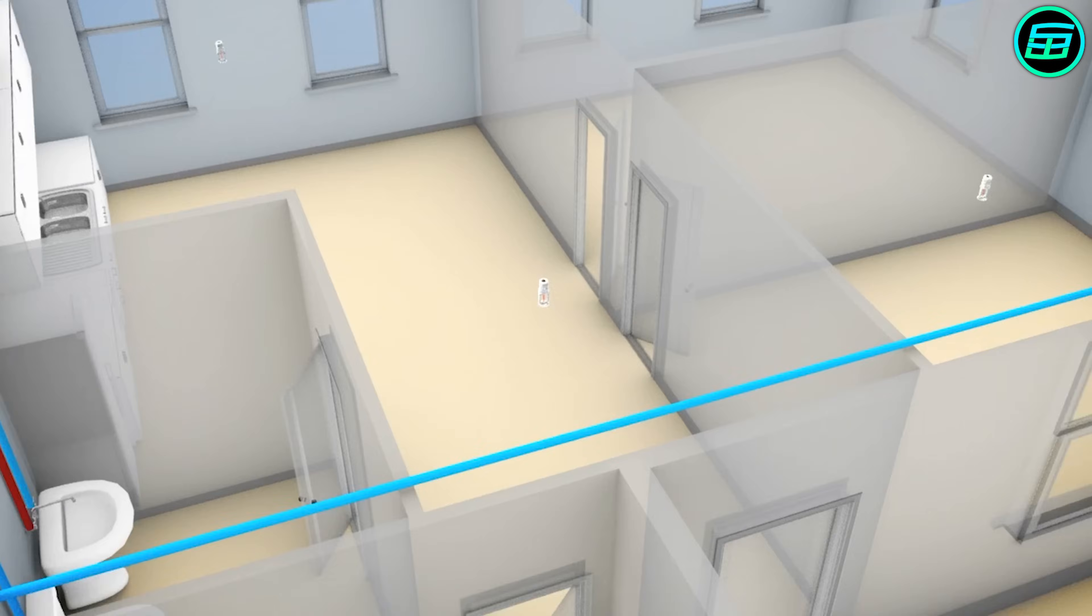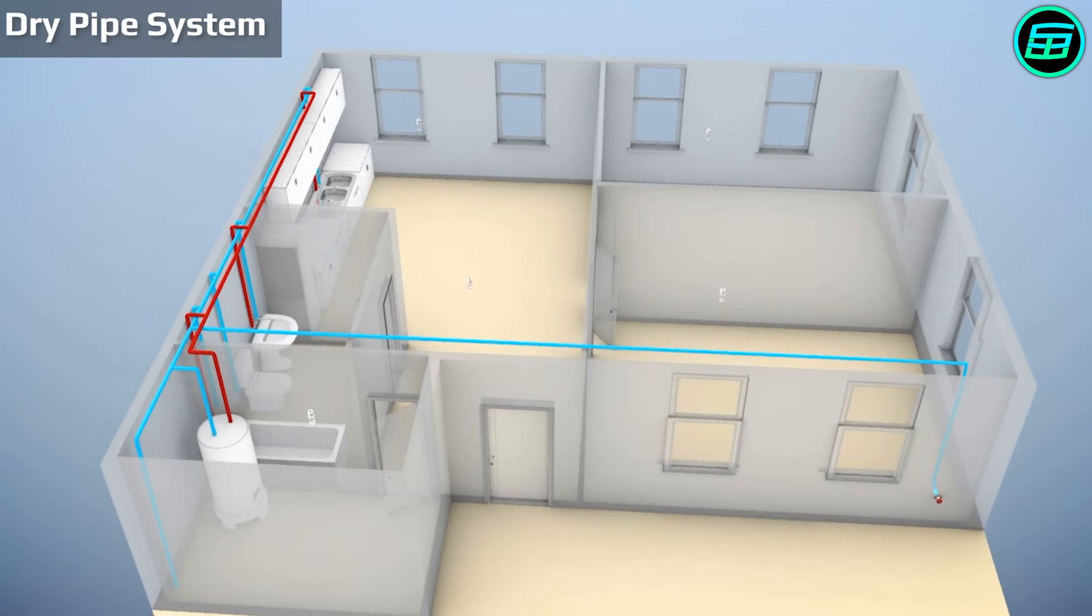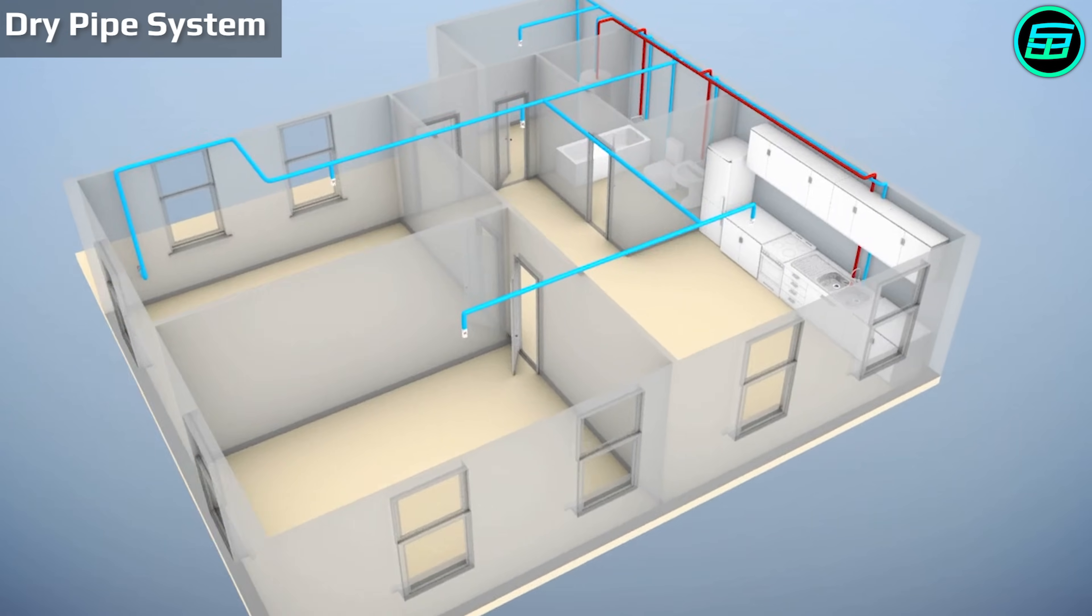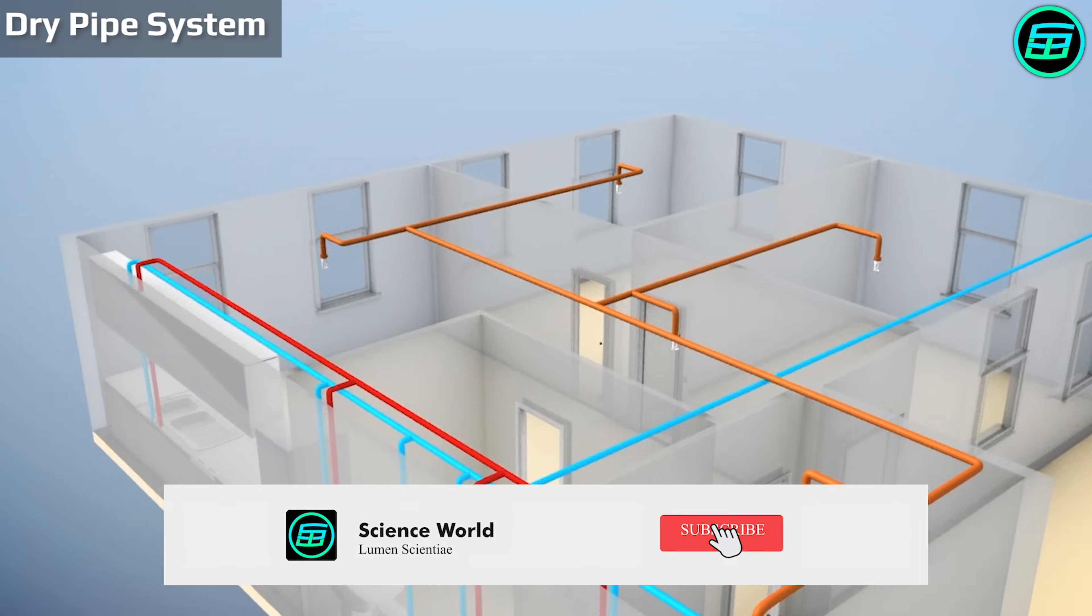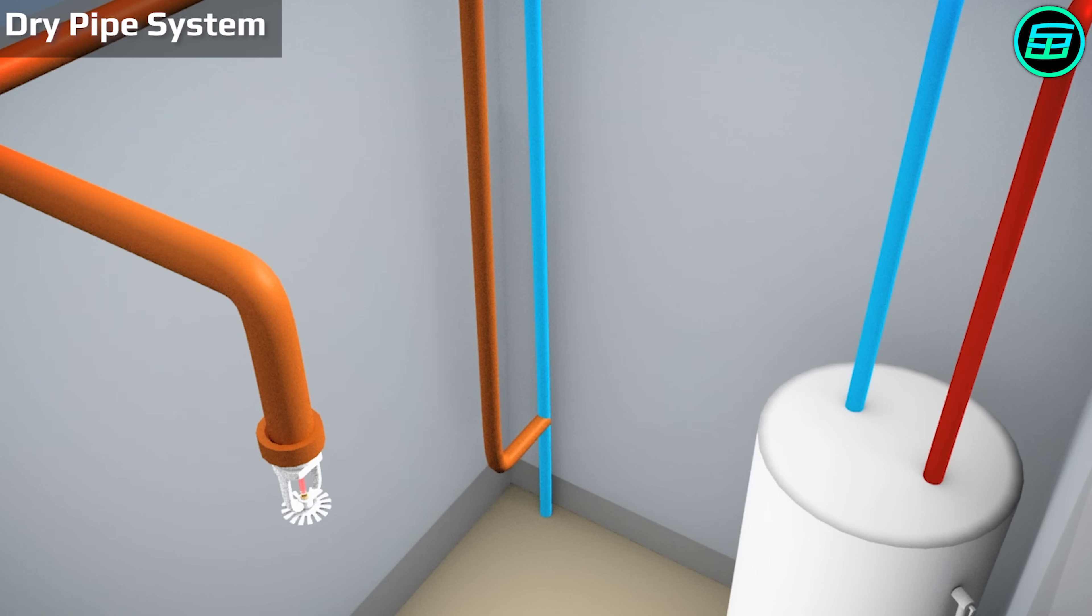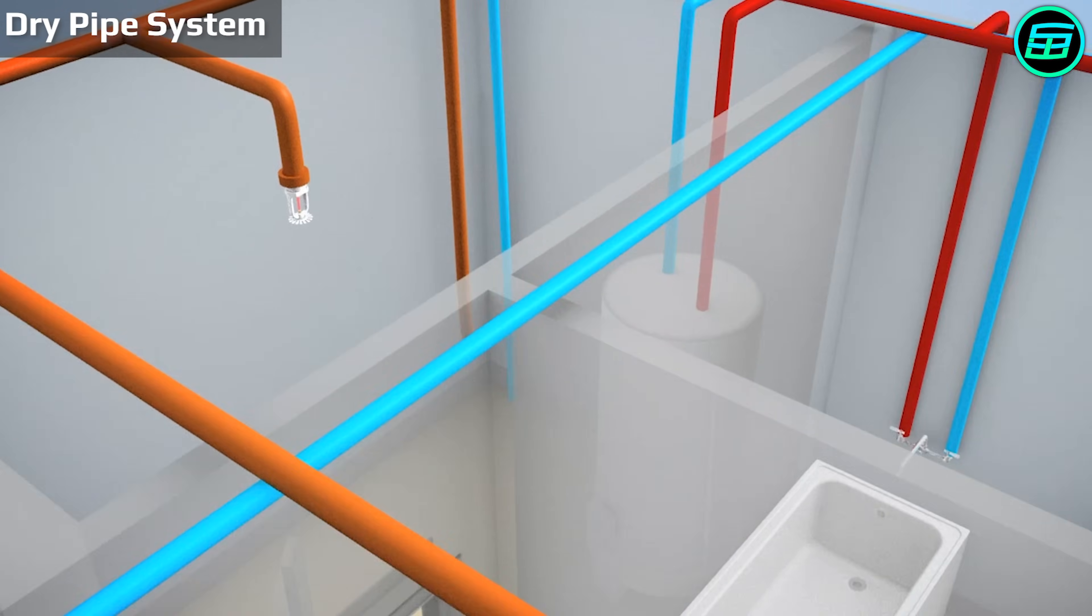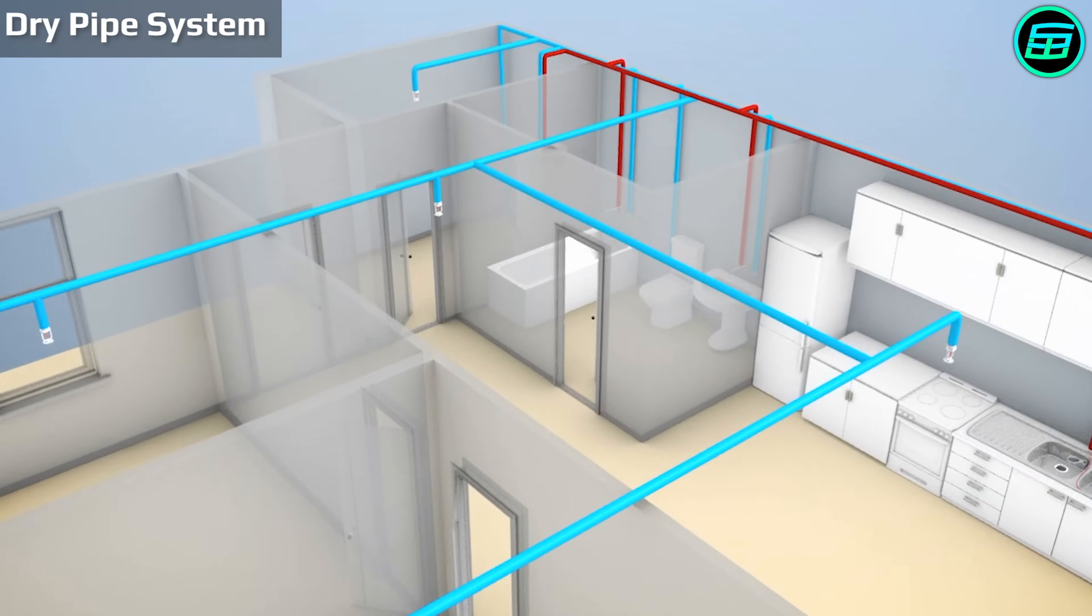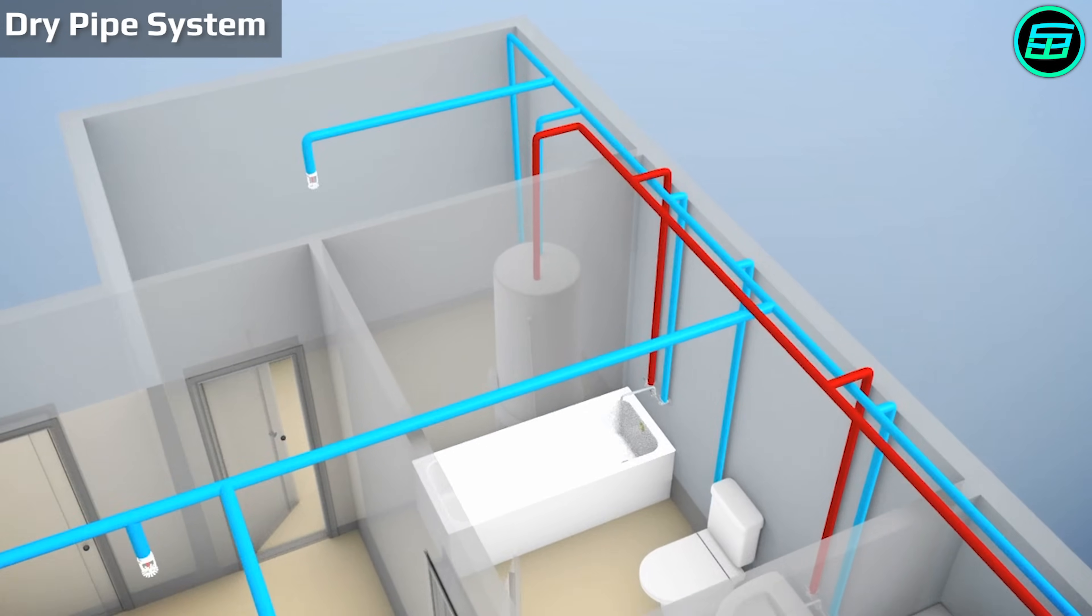Another type is the dry pipe system. In this, the pipes are filled with pressurized nitrogen which is released if a fire activates the valves in the sprinkler head. The pipes then fill with water, which is discharged over the smoke or flames. Dry pipe systems are widely used in cold climates since there's a high risk of frozen pipes preventing an emergency fire response.